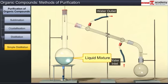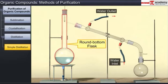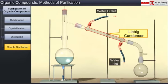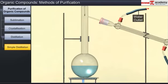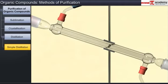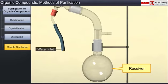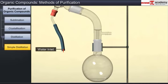In simple distillation, the liquid mixture is taken in a round bottom flask fitted to a Liebig condenser and heated. On heating, the vapors of the liquid with the lower boiling point are formed first, and at a constant temperature the whole liquid changes into vapors. The vapors are condensed using a condenser and the liquid is collected in a receiver placed at the open end of the condenser. The vapors of the liquid with the higher boiling point, formed later, are also condensed and the liquid is collected separately.